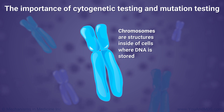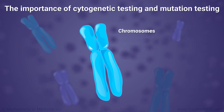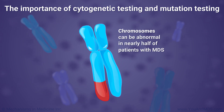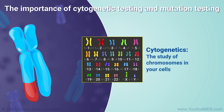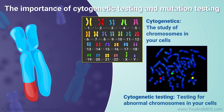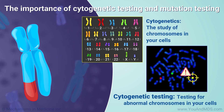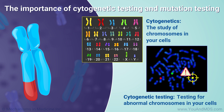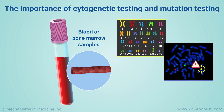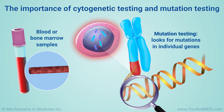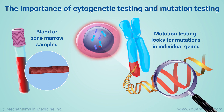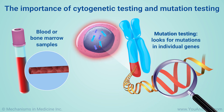Chromosomes are structures inside of cells where DNA is stored. They can be abnormal in nearly half of patients with MDS. The study of chromosomes in your cells is called cytogenetics. Testing for abnormal chromosomes in your cells is called cytogenetic testing. This is a standard part of an MDS evaluation. The testing is done by examining cells from a blood or bone marrow sample. Mutation testing looks for mutations in individual genes. This is done with a technique called next-generation sequencing, or NGS.